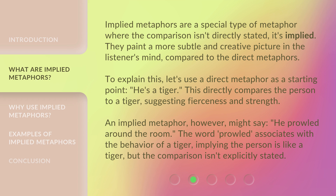An implied metaphor, however, might say: 'He prowled around the room.' The word 'prowled' associates with the behavior of a tiger, implying the person is like a tiger, but the comparison isn't explicitly stated.